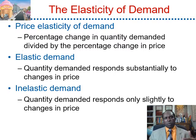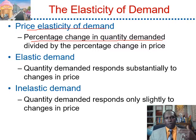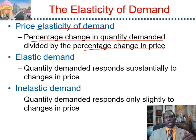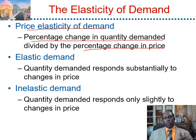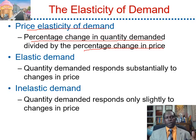So how do you compute price elasticity of demand? To compute price elasticity of demand, we take the percentage change in quantity demanded divided by the percentage change in the price. For instance, let's use the market of ice cream that we talked about in Chapter 4. If prices of ice cream increase by 5%, this will lead to a decrease in the quantity demanded of ice cream by 10%. Therefore, the value of the elasticity would be 10 divided by 5, which is equal to 2.